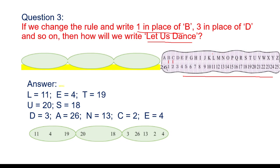Now let us decode 'let us dance.' For L we write 11, so L equals 11 — written twice. For E the number is 4, so I have written 4. For T the number is 19, so I have written 19. For U we have 20, and for S we have 18. In the same way, you have to complete the rest of the word 'dance.'